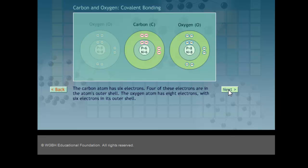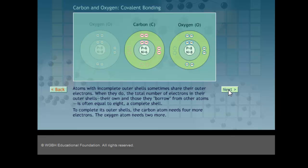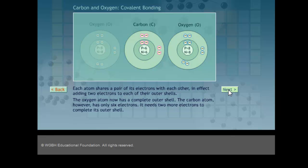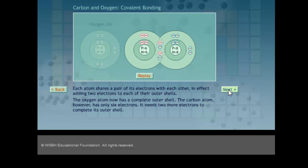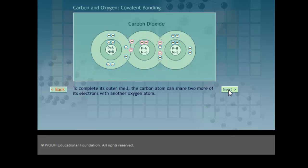Well, what can happen instead of ripping those electrons away and stealing them, the oxygens could just share them with the carbon. And if the carbon atom shares two electrons with one oxygen atom, two electrons with another, what happens here is that fills up all of the valence electron shells. Because the oxygen is sharing two electrons with the carbon. The carbon is sharing its outer electrons and everyone's happy. This is a covalent bond.